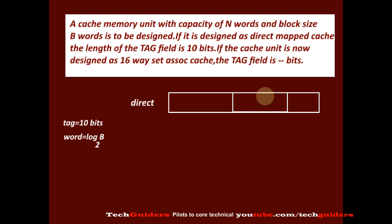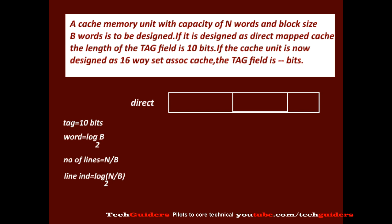To find out the number of bits for the line index, we find the number of cache lines. The number of cache lines is the size of the cache divided by the size of the cache block, that is n by b. So the number of bits required for the line index is log(n/b) to the base 2. So the word field is log b to the base 2, line index is log(n/b) to the base 2, and the tag is 10 bits.